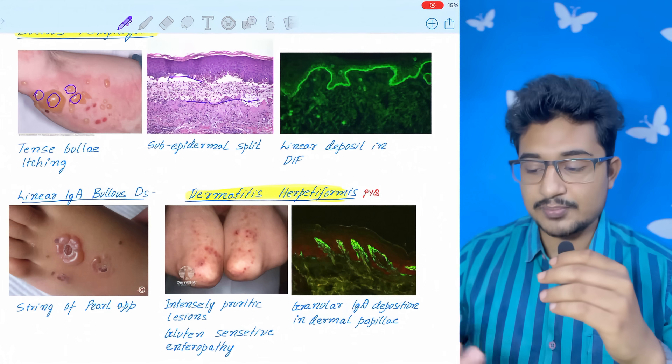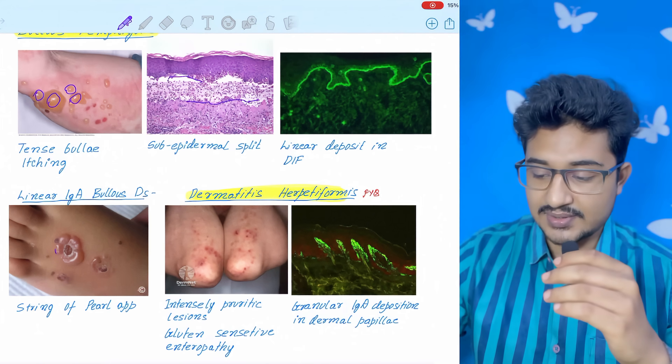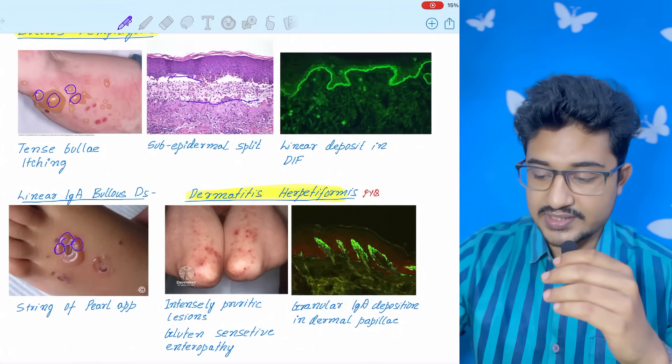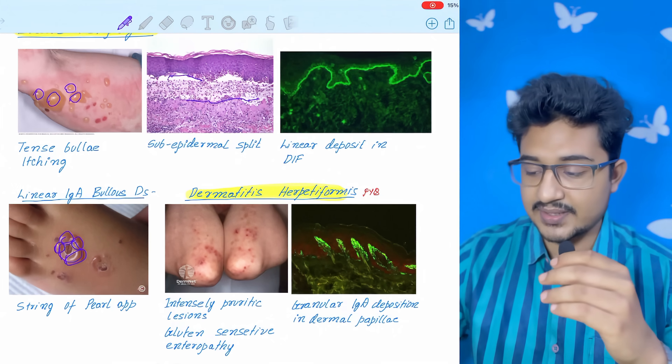Linear IgA bullous disorder. There would be a string of pearls appearance, as you can see. Like this is one blister, one blister, one blister, another. Four blisters arranged in a ring of pearls appearance.